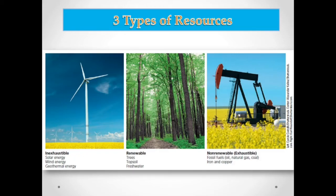The last type is non-renewable resources, also called exhaustible resources. These take a very long time to be restored or renewed. Examples include fossil fuels such as oil, natural gas, and coal, as well as minerals like iron and copper. These are non-renewable or exhaustible resources.